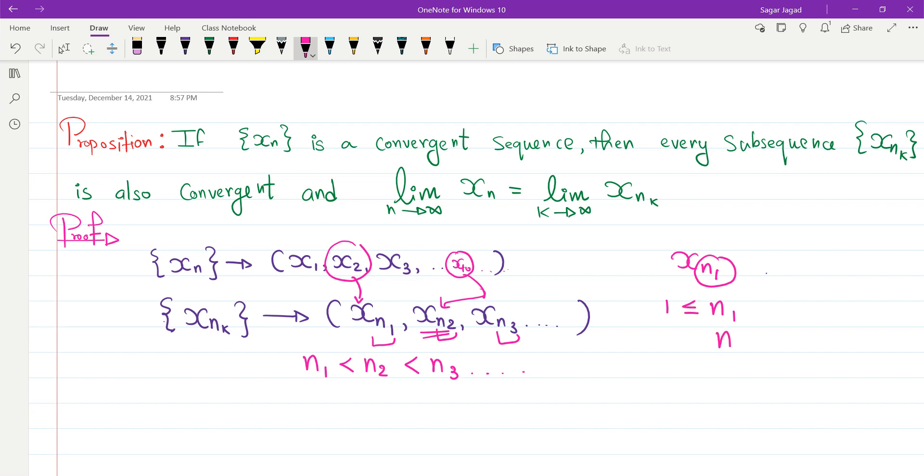Similarly, this value of n2 can be equal to 2 or it would be something above 2. If we keep going, what we observe is that ni would be greater than or equal to the i-th place. So suppose if I consider all of them to be equal (n1 equals 1, n2 equals 2, and so on, ni equals i), then that subsequence becomes the sequence itself. For any other subsequence, this condition is going to hold.